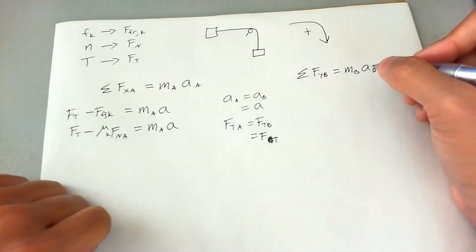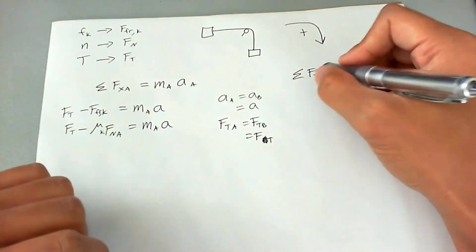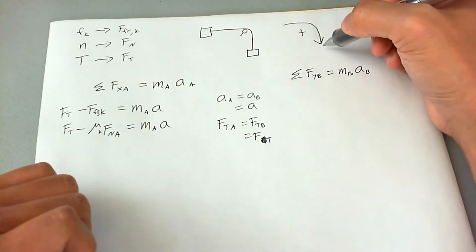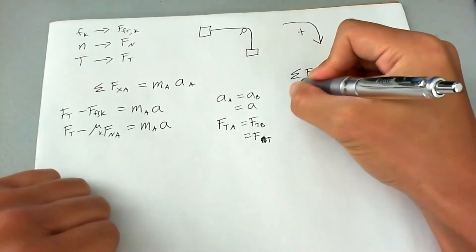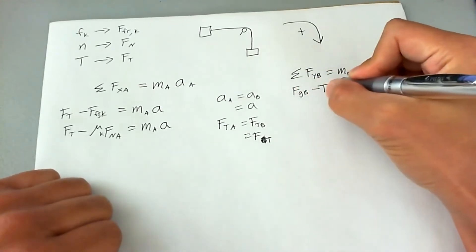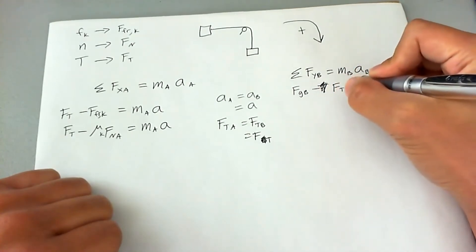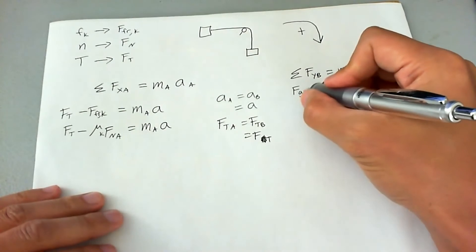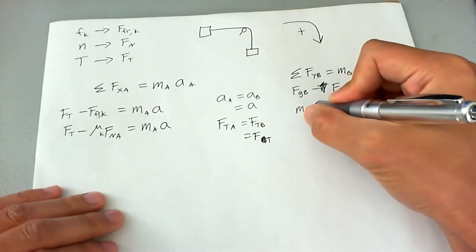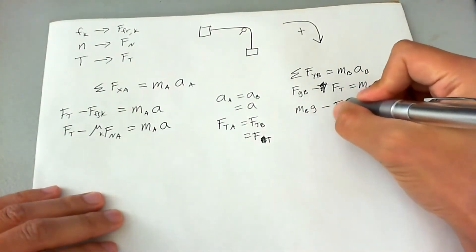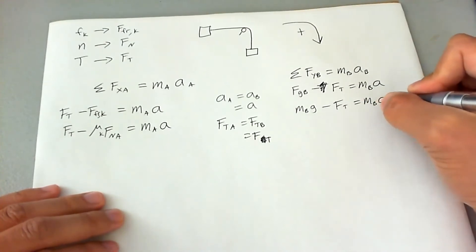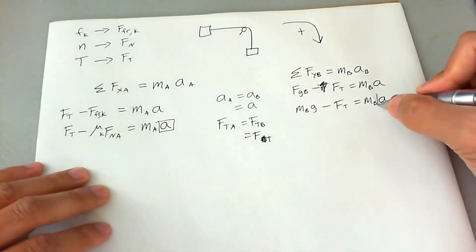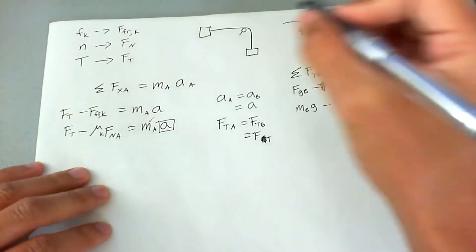For block B in the Y direction, there are two forces acting on it. Gravitational force is positive since it's going down and we've defined that as positive, and tension is negative. So the force of gravity of block B minus the force of tension equals mass of block B times the universal acceleration A. Breaking it down: MB times G minus F_T equals MB times A. We need to find acceleration, so let's identify what we know and don't know.